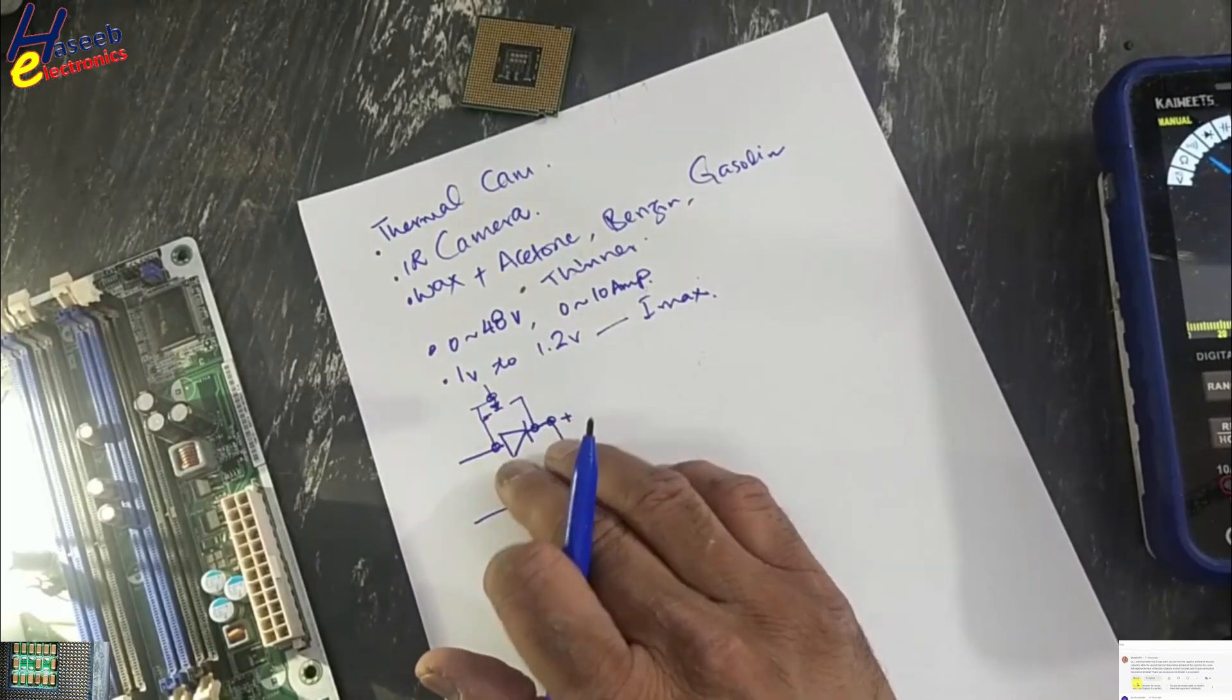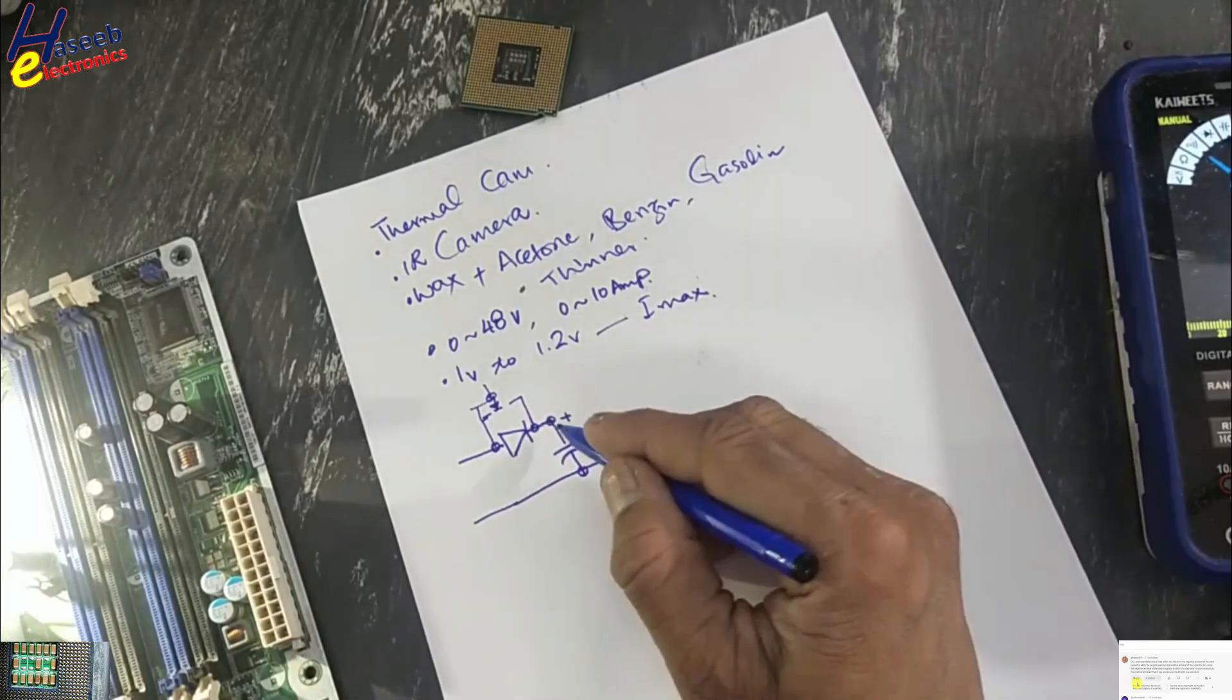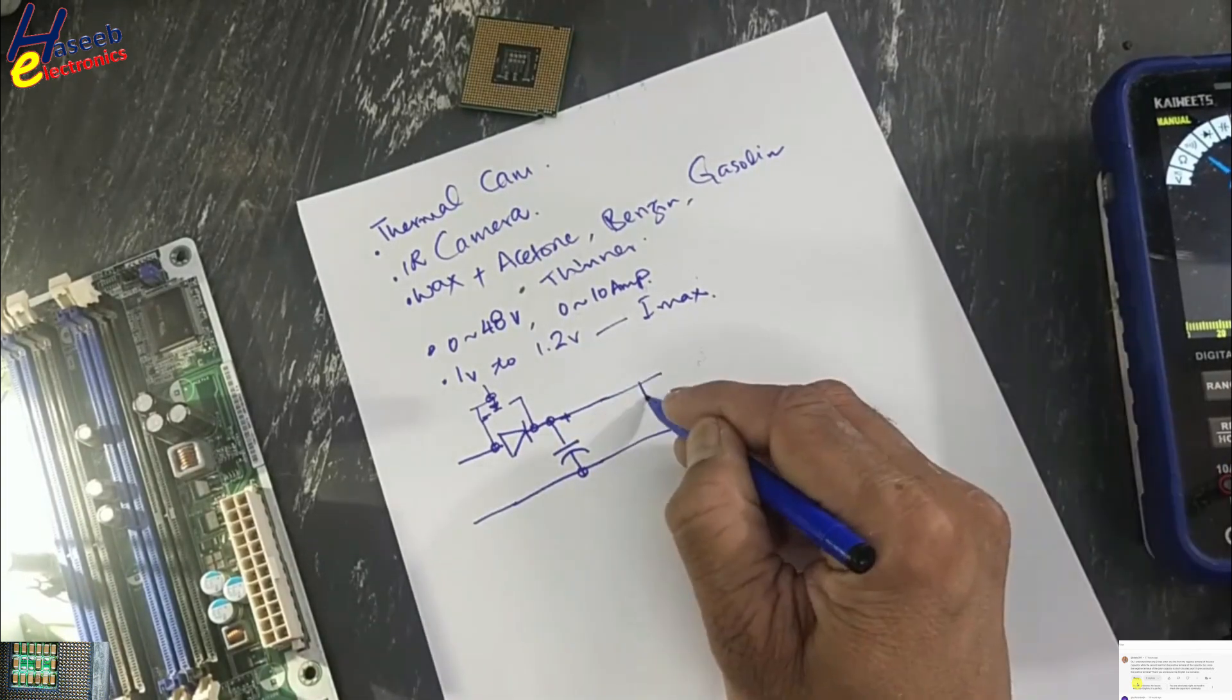So we are taking voltage from here. Here is our capacitor bank.